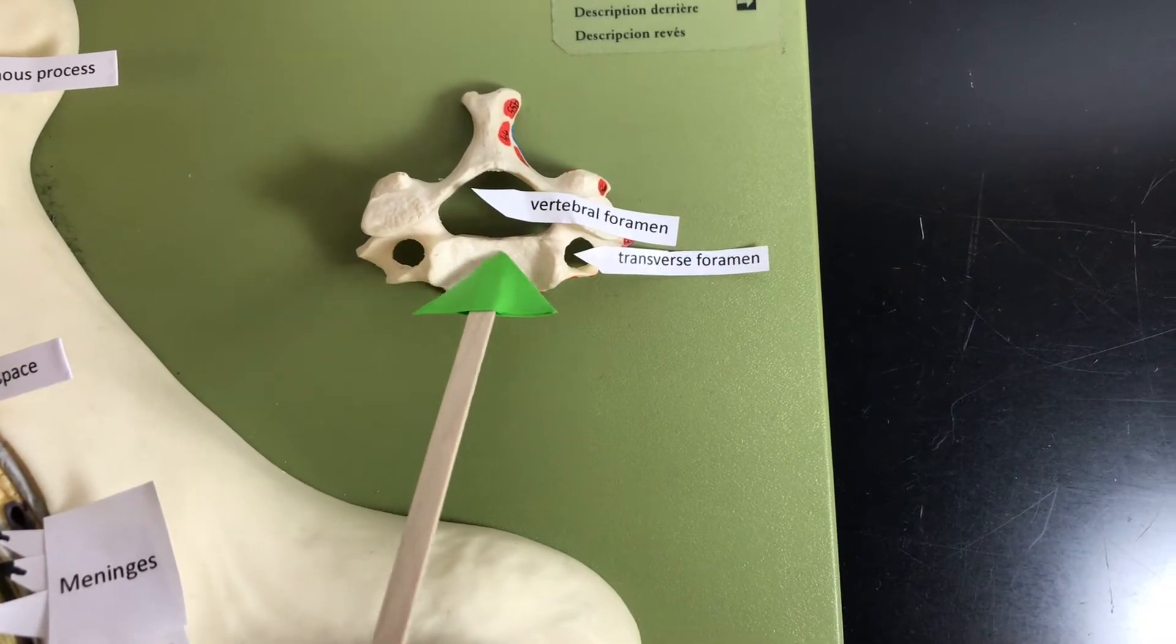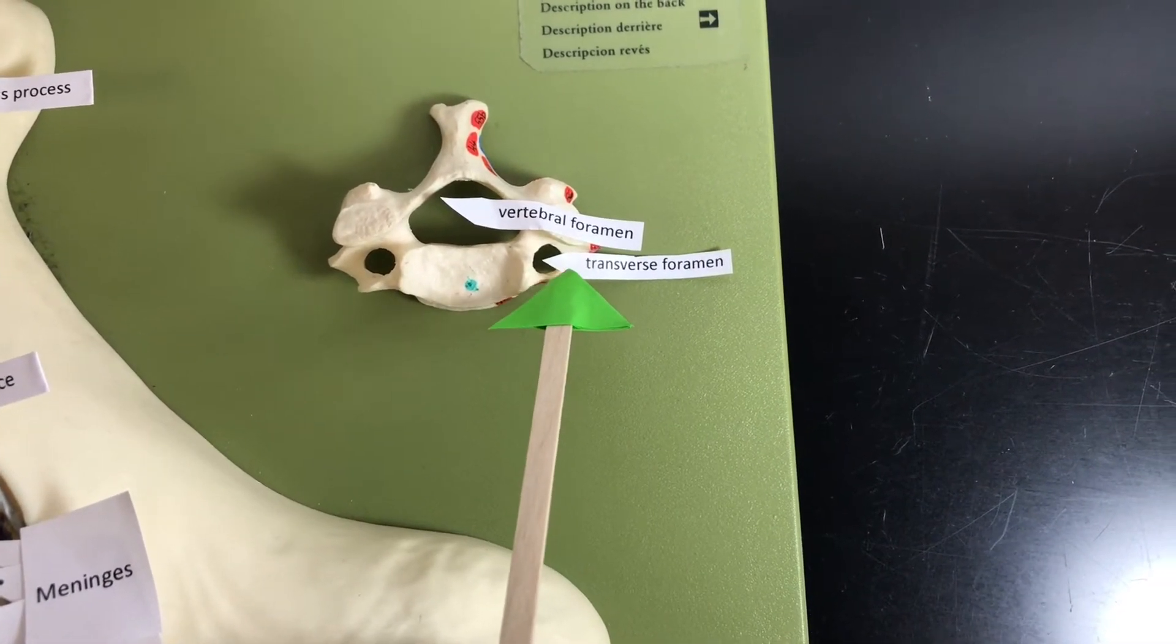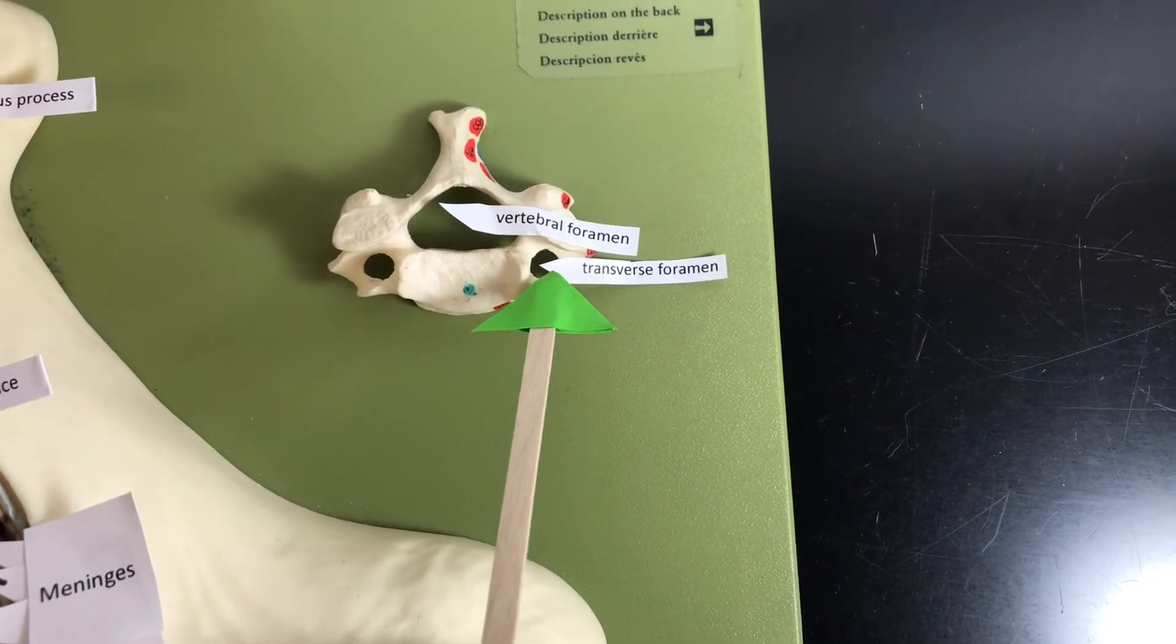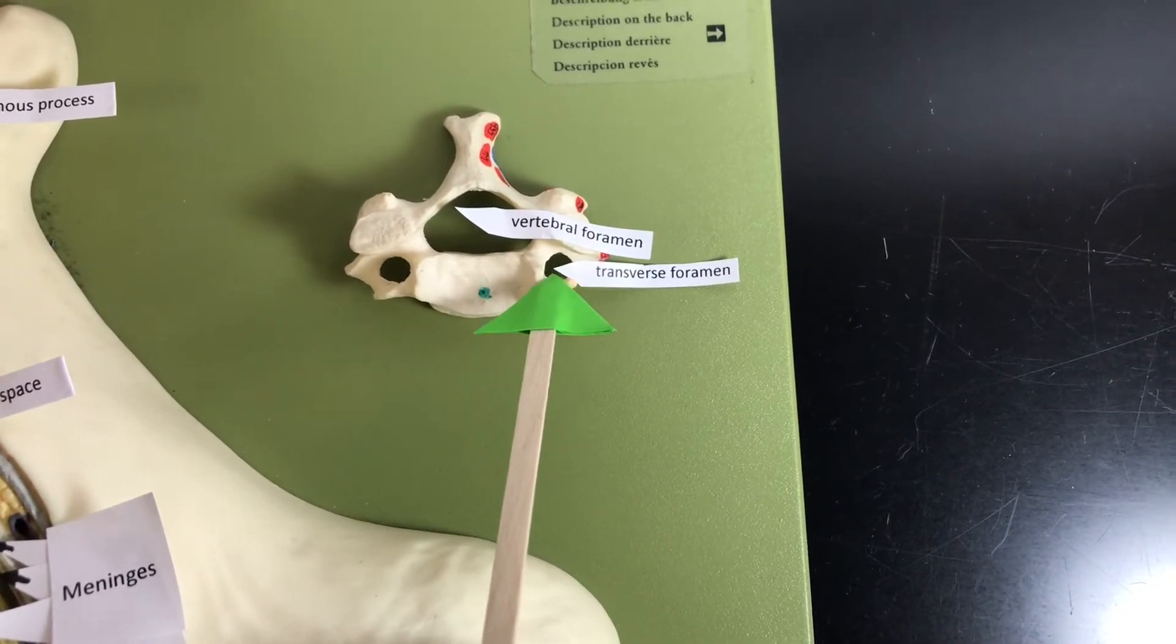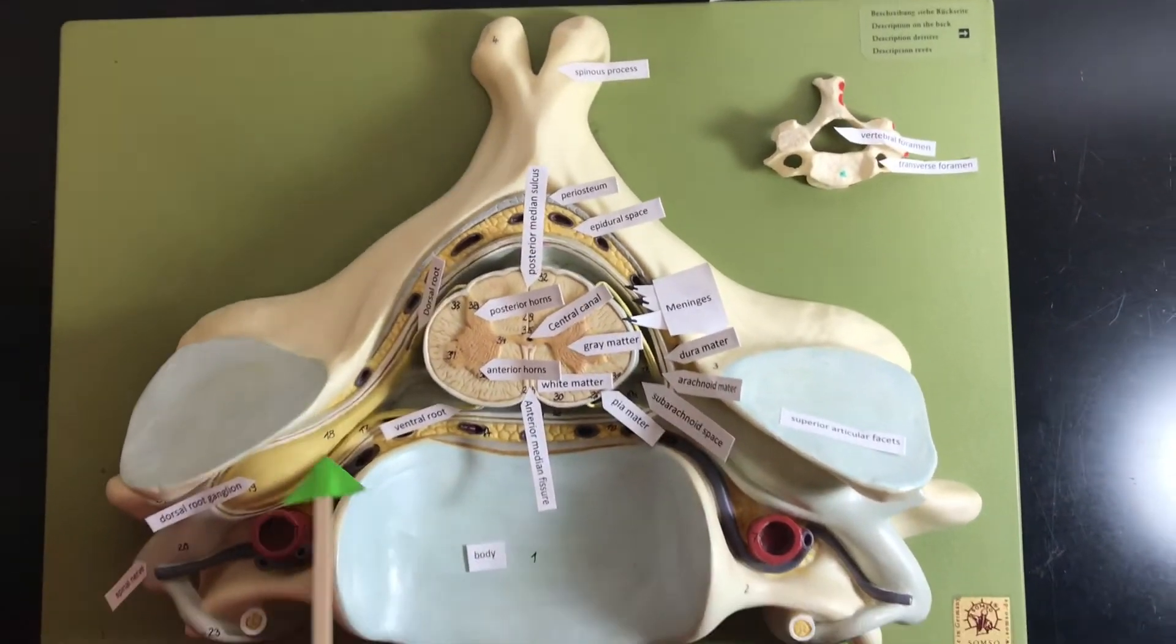Here's the body. And then lateral to the body we have a transverse foramen. That's where the blood vessels are going to go through to supply the brain. So over here we have our cervical vertebrae.